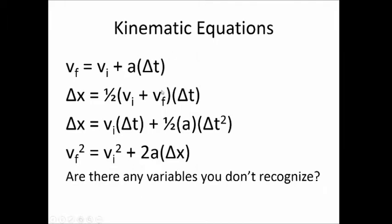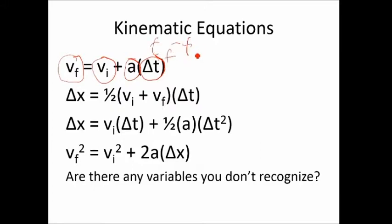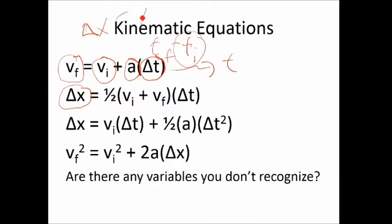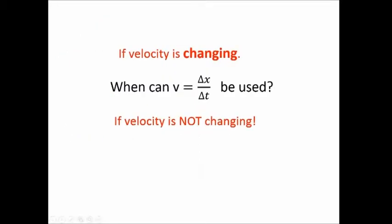Here are our four kinematic equations. We use these when velocity is changing. The variables involved are: VF (final velocity), VI (initial velocity), acceleration, and ΔT (time — which is final time minus initial time, and since we usually set initial time to zero, ΔT is often just called T). We also have ΔX, which is always the final X minus the initial X.